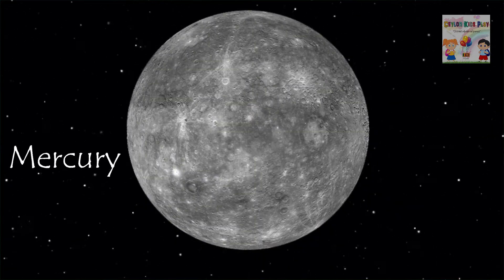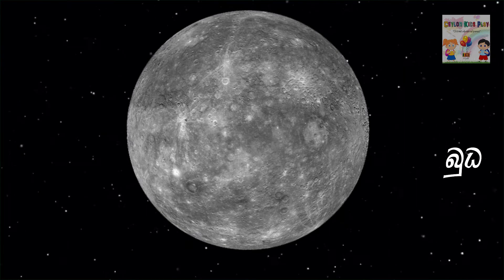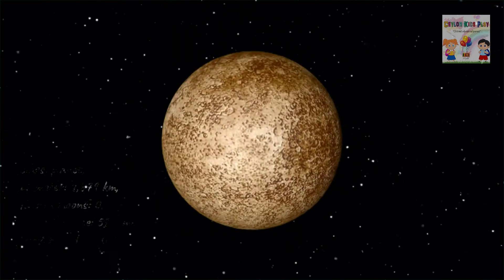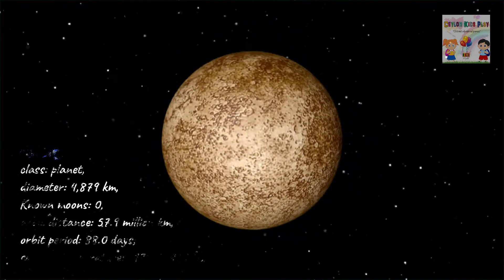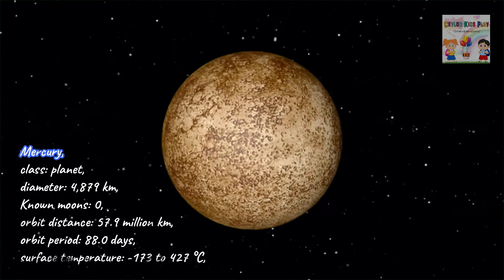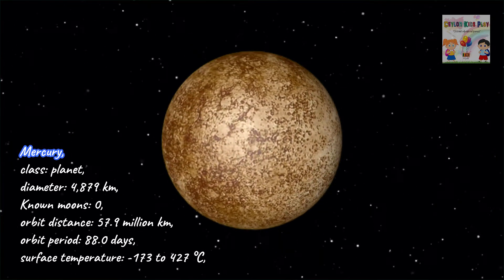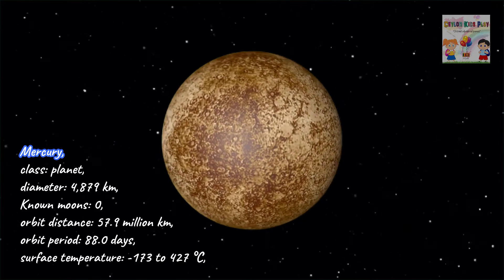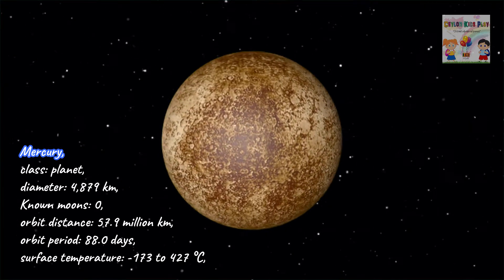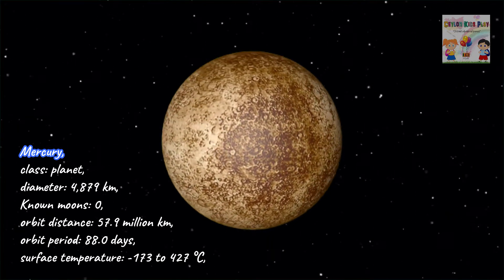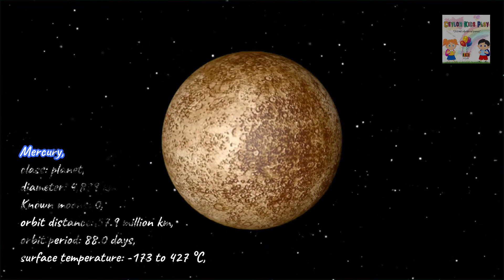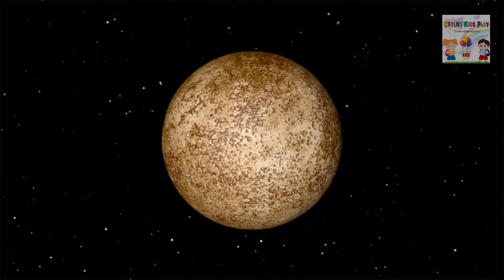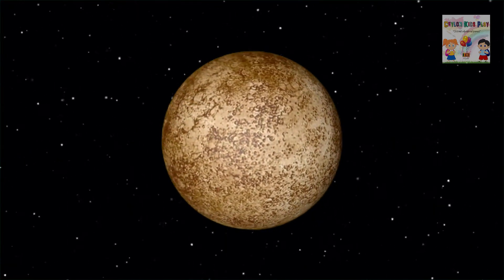Mercury. Mercury, class: planet. Diameter: 4,879 km. Known moons: zero. Orbit distance: 57.9 million km. Orbit period: 88.0 days. Surface temperature: minus 173 to 427 degrees Celsius.